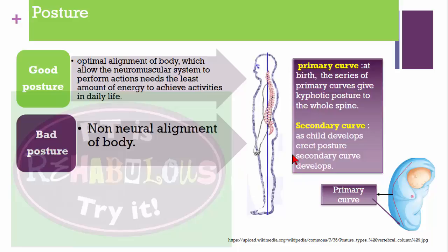That's why we need to learn about good posture and bad posture. Good posture means optimal alignment of the body which allows the neuromuscular system to perform actions with the least amount of energy to achieve activities in daily life. Bad posture means non-neutral alignment of the body — if you have muscular imbalance in the pelvis, shoulder, or head, that will create forward head posture, kyphosis, scoliosis, etc.